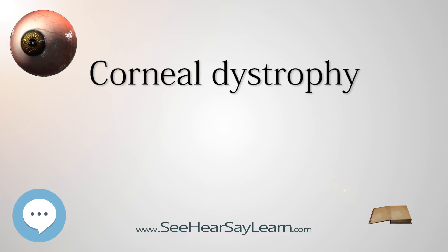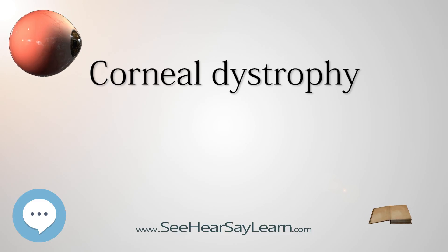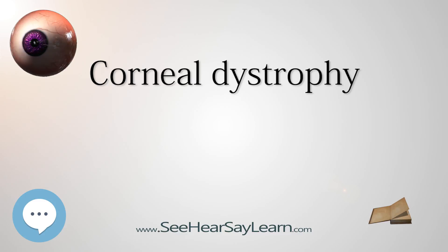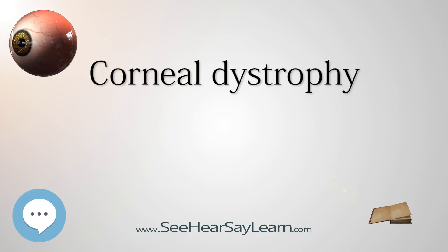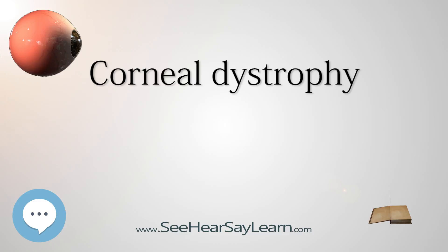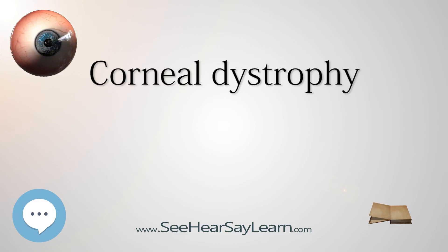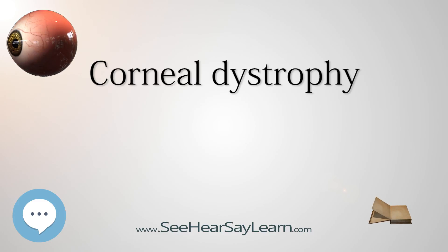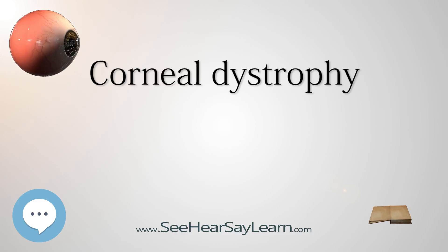Signs and symptoms: corneal dystrophy may not significantly affect vision in the early stages; however, it does require proper evaluation and treatment for restoration of optimal vision. Corneal dystrophies usually manifest themselves during the first or second decade, but sometimes later. They appear as grayish-white lines, circles, or clouding of the cornea, and can also have a crystalline appearance. There are over 20 corneal dystrophies that affect all parts of the cornea.